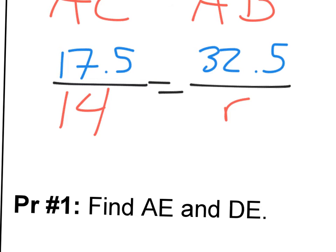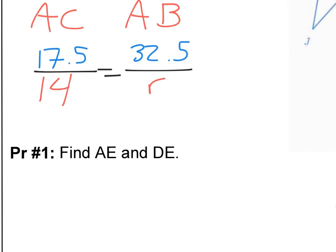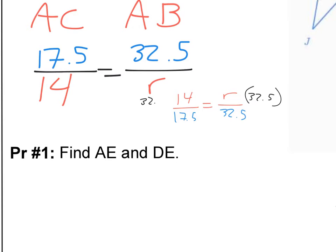We've done a few of these before. There are lots of different ways to do it — we can cross multiply and divide. What I like to do, if the variable is on the bottom, is flip both sides. So I'm going to flip both fractions: 14 over 17.5 equals R over 32.5. Now R is being divided by 32.5, so I multiply both sides by 32.5.